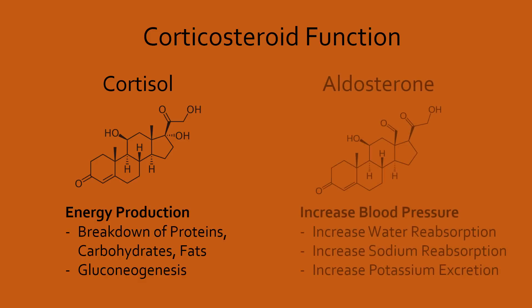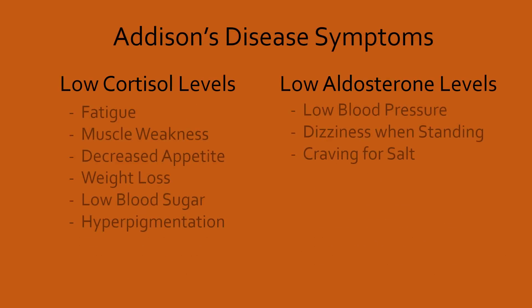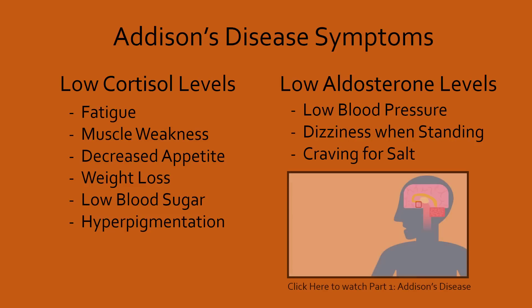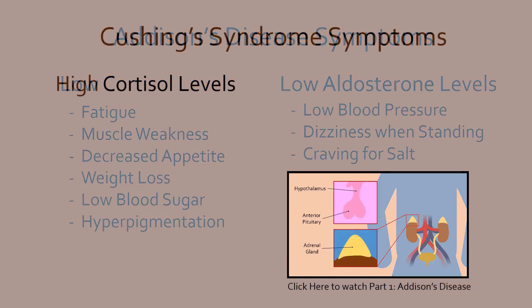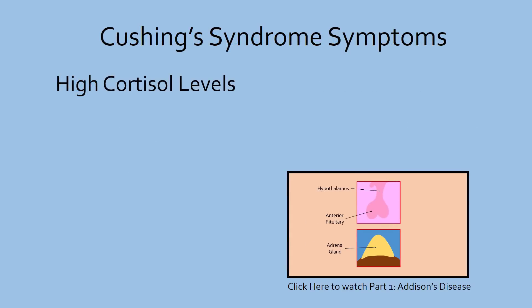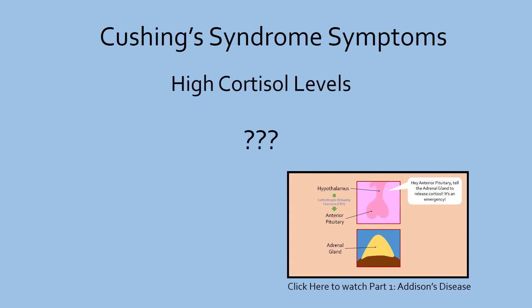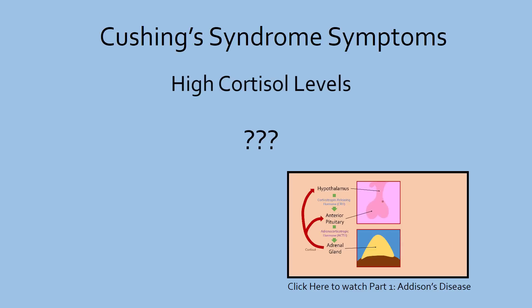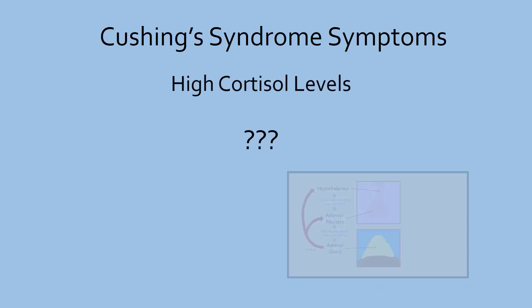Last video, we talked about the functions of cortisol and aldosterone, as well as how a lack of these corticosteroids causes Addison's disease. What happens, though, when there is instead too much cortisol? Join me in this episode of Medicurio, where we will discuss Cushing's syndrome, the counterpart of Addison's disease.